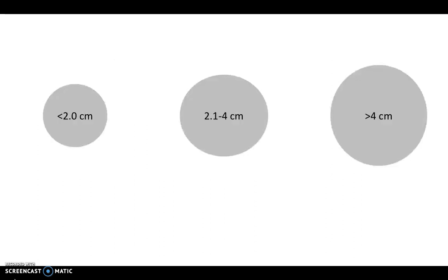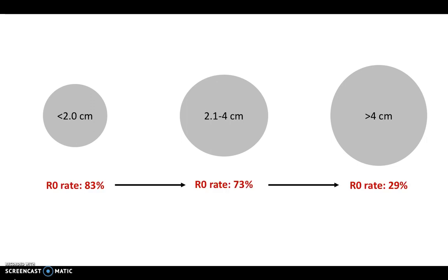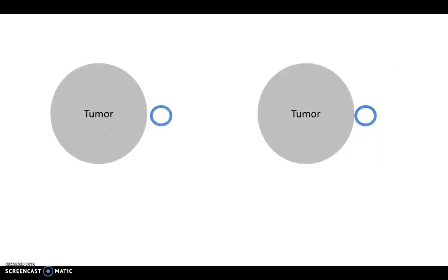If you look at the details, as tumor size increases from 2 cm to 4 cm, the R0 resection rate drops from 83% to 29%. Similarly, if the tumor abuts the portal-mesenteric vein, the R0 resection rate drops from 80% to 59%.